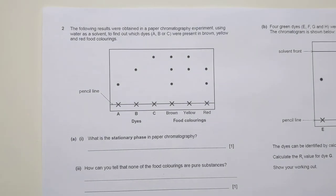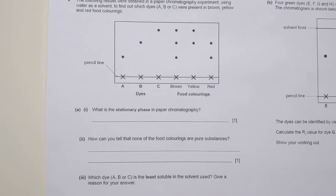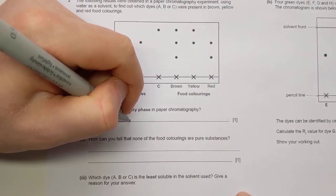Okay, final question on chromatography then. So the following results were obtained in a paper chromatography experiment using water as a solvent to find out which dyes are present in yellow, brown and red food colorings. A couple of factual questions to start with. What is the stationary phase in the chromatography? So stationary phase means one that does not move. So the thing that doesn't move in the experiment is the paper. It stays stationary.